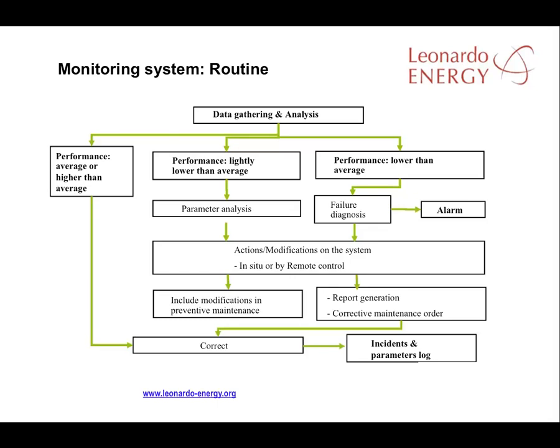Here is an overview of how the typical routing for a monitoring system appears. Once the data has been gathered and analyzed, the level of performance of the PV facility is known and decisions can be made on whether corrective action is needed. If performance is slightly lower than average, we should analyze all the parameters in the solar plant, especially those coming from the inverters, and take all the actions or modifications the system needs to improve these parameters. These modifications can be done remotely or in situ, but usually it is necessary to have staff in the PV facility. All modifications must be included in the preventive maintenance plan to ensure they are undertaken periodically to improve plant performance.